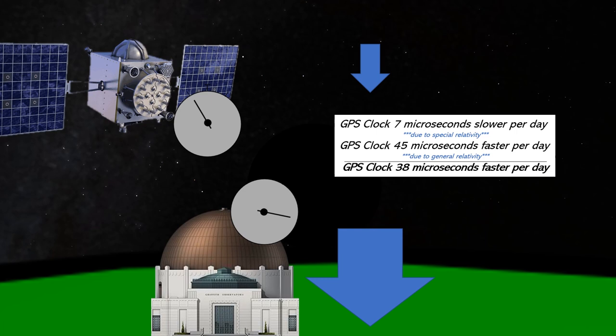A microsecond doesn't seem like much, but because GPS works by computing the time it takes for a signal to reach us from multiple satellites, this tiny time error can add up to a position error of 10 kilometers after only one day.